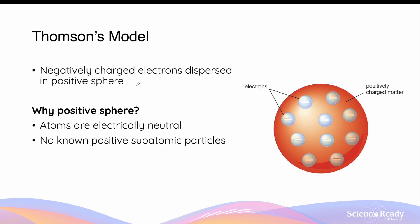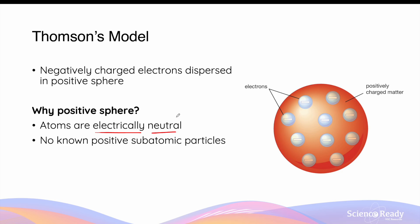Thomson's discovery of the electron ultimately led to the development of the very first model: Thomson's atomic model, also known as the plum pudding model. In this model, Thomson described the atom as made of negatively charged electrons dispersed within a positive sphere. The reason he proposed electrons must be embedded within a positive sphere is because at the time we knew all atoms were electrically neutral — they didn't have a positive nor negative charge. Since electrons were negatively charged, Thomson thought there must be a positive matter that neutralized all the negative charges of these electrons in order to give the atom its neutral charge.